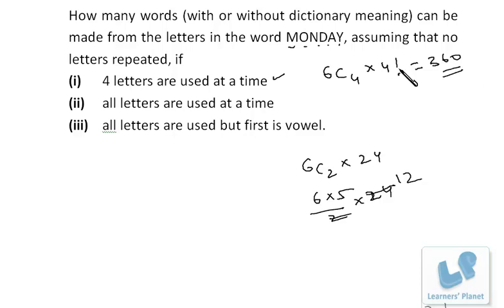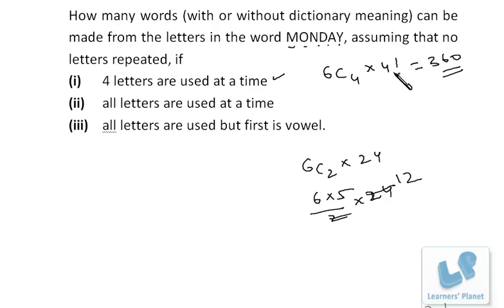When all letters are used at a time — 6 places and 6 letters — the number of arrangements is simply 6! ways.